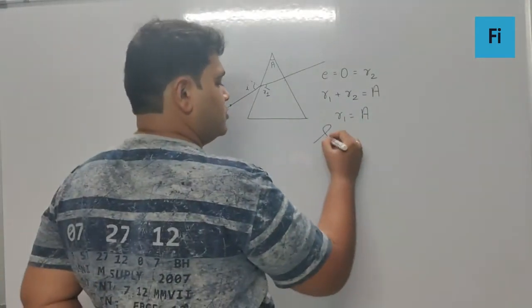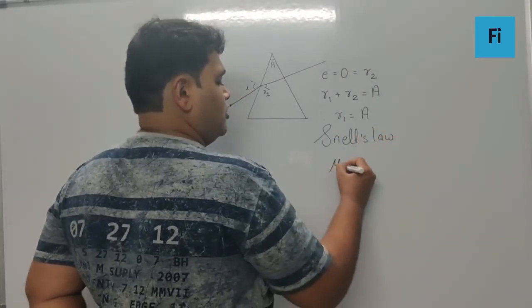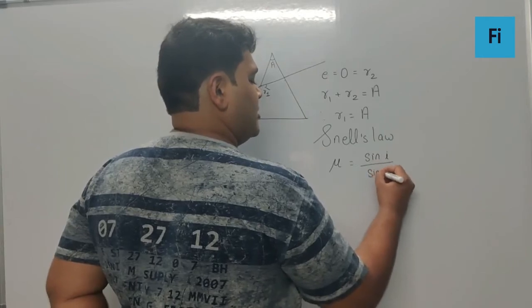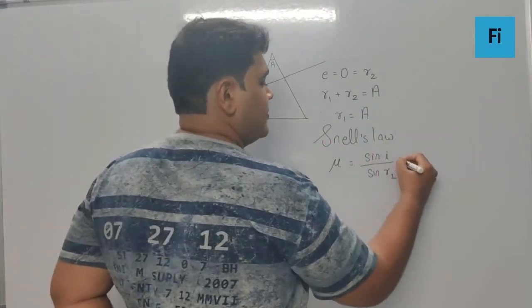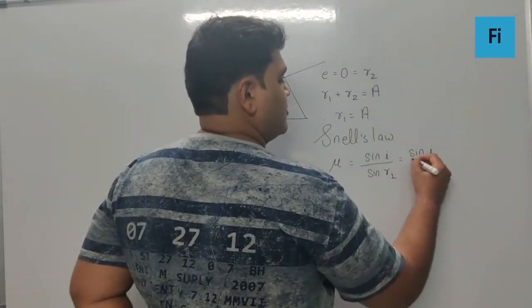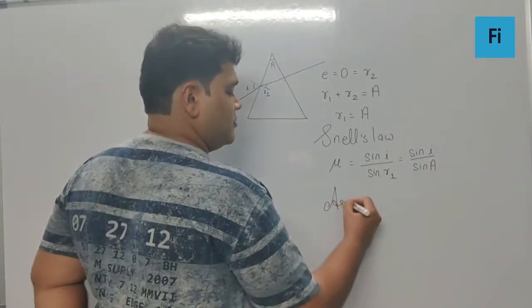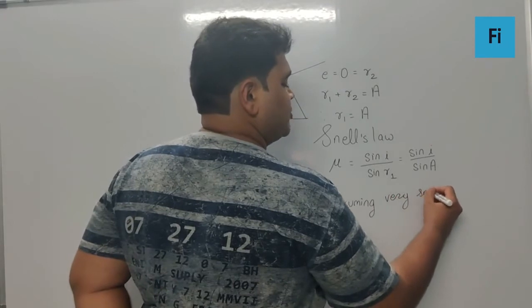Now by Snell's law, μ is nothing but sine of i upon sine of r₁. Now instead of r₁, I can put A, assuming very small angles.